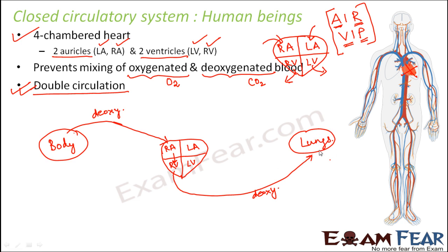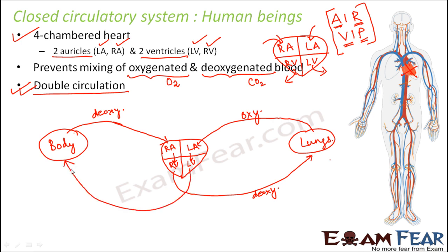Inside the lungs, alveoli are present where exchange of oxygen and carbon dioxide takes place, as we learned in respiration. Once that exchange has happened, the blood coming out of the lungs is oxygenated — rich in oxygen supplied through breathing. This oxygenated blood then goes to the left auricle, the left auricle sends it to the left ventricle, and the left ventricle pumps it to different parts of the body.